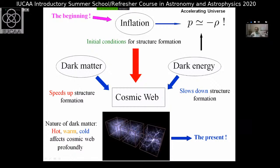The cosmic web consists primarily of baryons — protons, electrons bound to them, neutral hydrogen, and stars. All these things reside on the cosmic web. But the dark sector also plays a very key role in its formation. Dark matter speeds up structure formation, whereas dark energy slows it down.